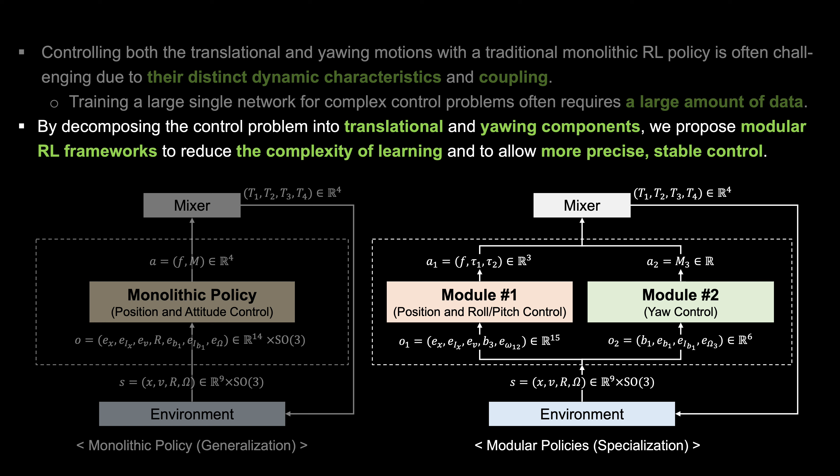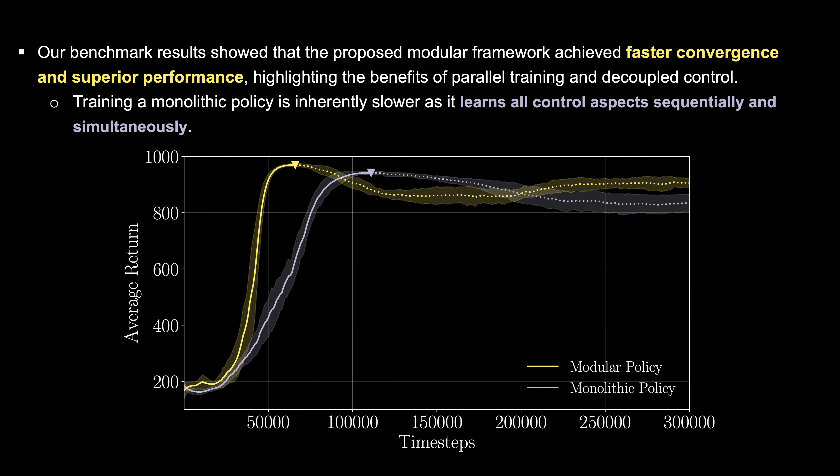To address these challenges, we propose a modular reinforcement learning framework. By breaking down the control problem into separate translational and yawing components, we reduce the complexity of the learning process and enable more precise and stable control. Our benchmark results clearly show the advantages of the modular framework.